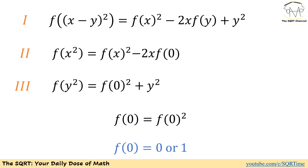Now we have three equations. The most trivial approach is to put x equals 0 into equation 2. If we do this, f of 0 equals f of 0 squared minus 0, which leads to f of 0 equals f of 0 squared. We get the same result using equation 3. So f of 0 can be 0 or 1, and we are going to use this for the rest of the video.